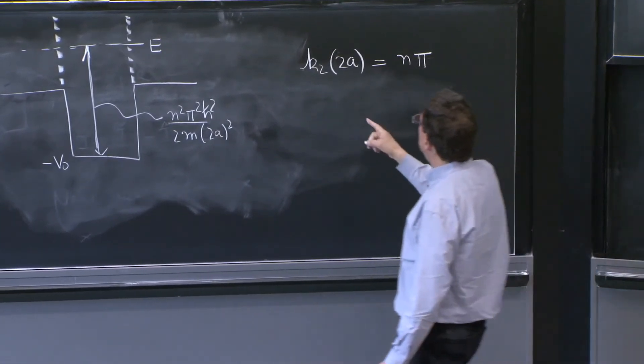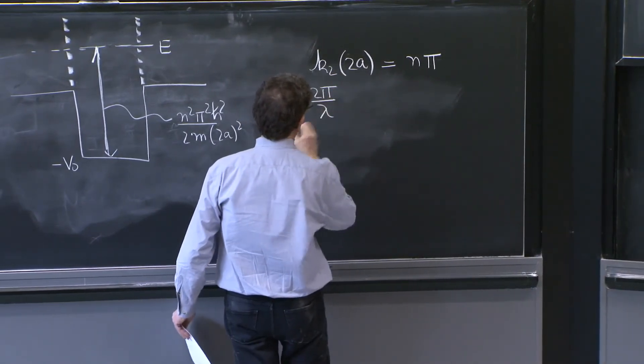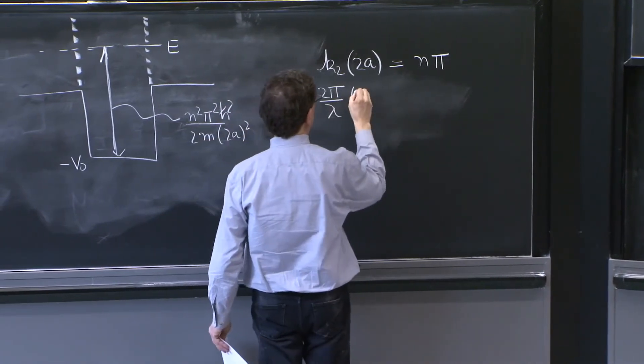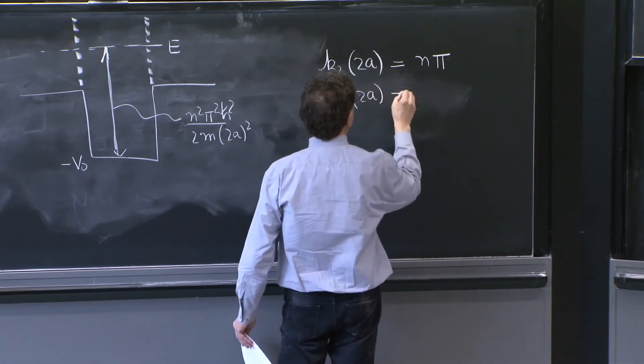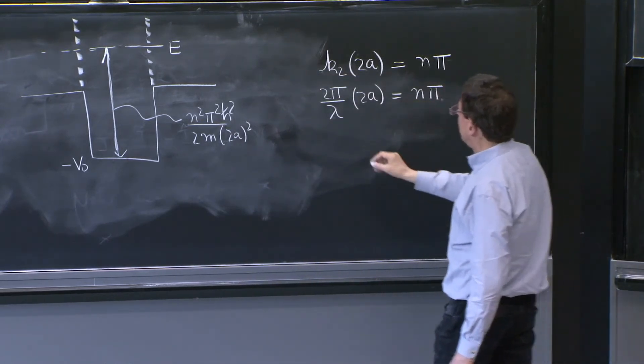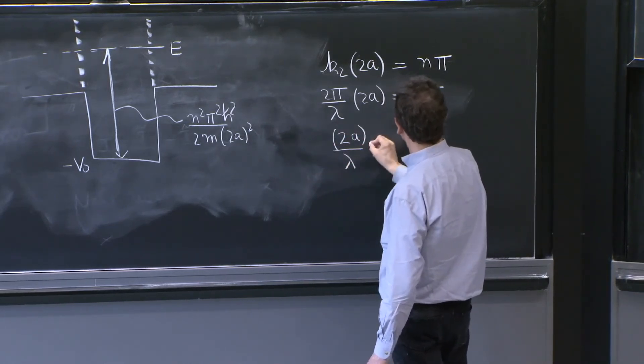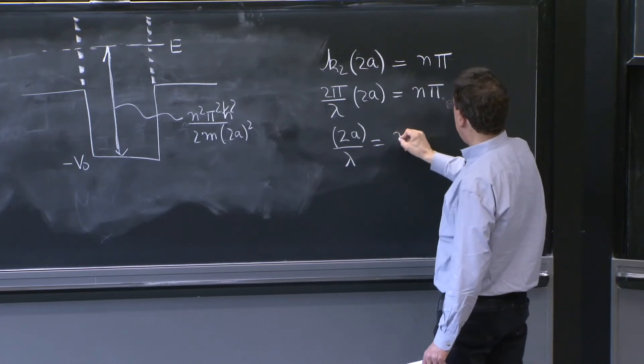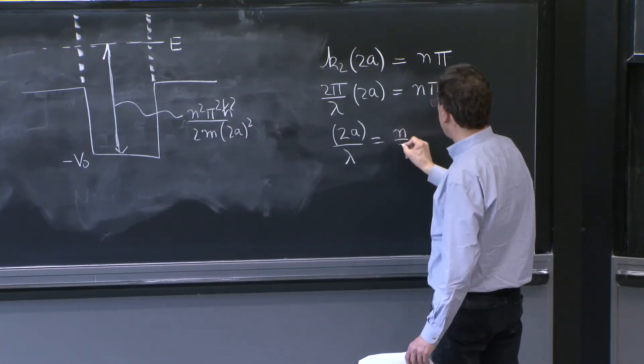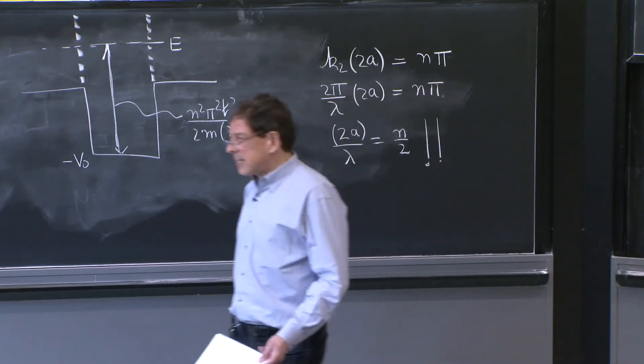But k2 is 2pi over the wavelength of the wave that you have in this range over 2a is equal to n pi. So we can cancel the pi's and the 2s, and you get 2a over lambda is equal to n over 2. And what does that say? So in this way,